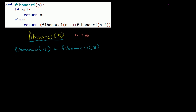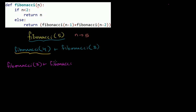n is equal to 4. Once again, 4 is not less than 2, so we don't do the return n part — we go to the else. So we're going to return Fibonacci of 4 minus 1, which is 3, plus Fibonacci of 4 minus 2, which is Fibonacci of 2.